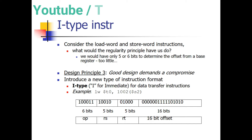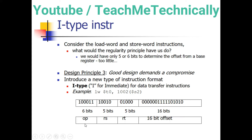We are going to discuss the I-type instruction in MIPS. The format of an I-type instruction is: first we have the opcode, then a source register rs, another source register rt, and then a 16-bit offset. We do not have a destination register rd. The opcode uses 6 bits, rs uses 5 bits, rt uses 5 bits, and the remaining 16 bits are reserved for the address or offset.